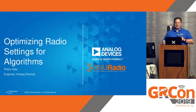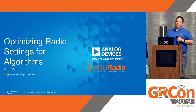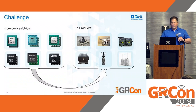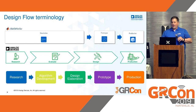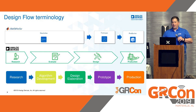The talk I'll be giving now is optimizing your radio settings for algorithms. As I've talked about in previous radio discussions, the challenge that a lot of people have is going from devices or chips that various chip manufacturers make to actual products. And there's a lot of gap in between there. MathWorks talks about going from simulation to prototyping to production. Analog Devices usually talks about going from research to evaluation to design to production — a very hardware-centered view of the world.